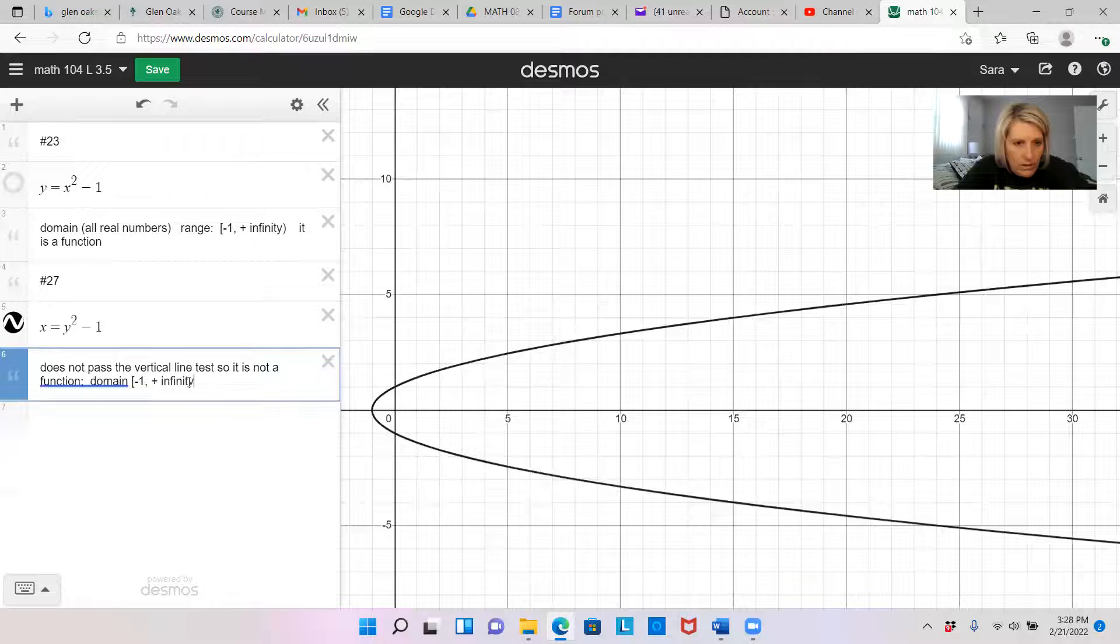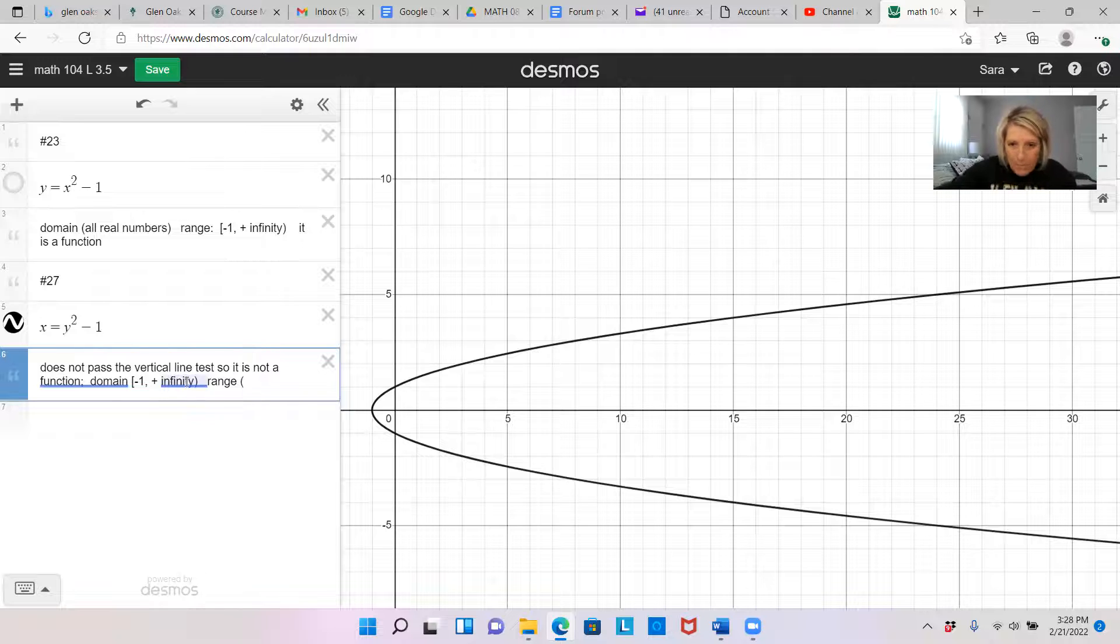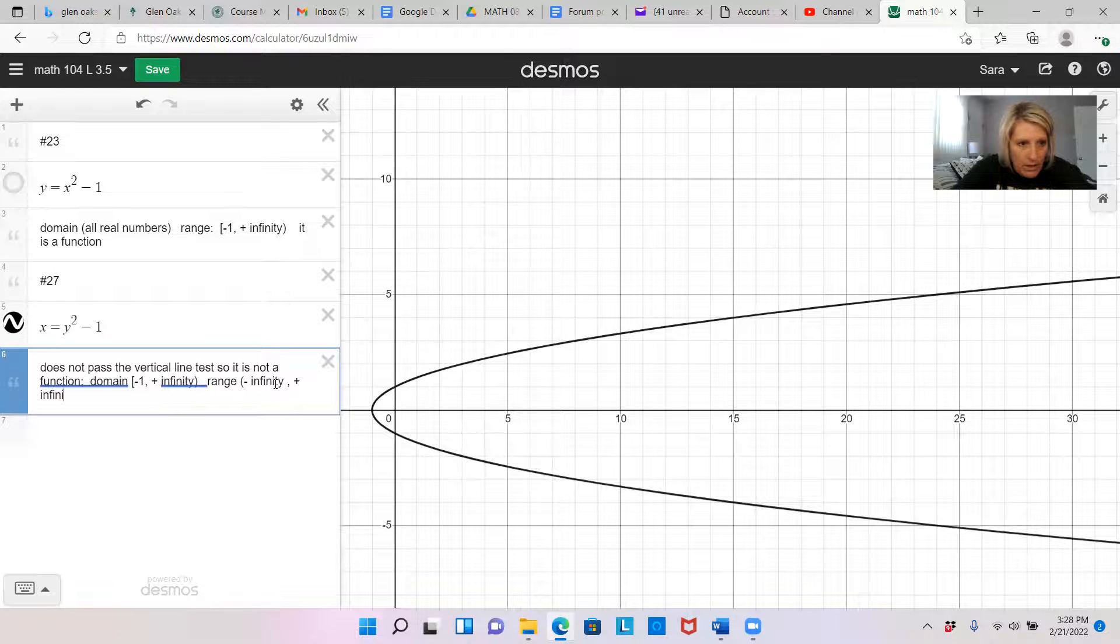And it looks like it goes forever in the positive direction. So then it'll be a positive infinity. I'm using words instead of, I don't have symbols here. And that gets a parentheses. And then the range is just going to go forever down and then forever up this way. So the range is going to be a negative infinity up to a positive infinity on that one.